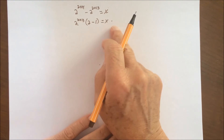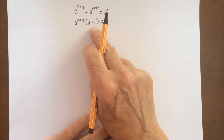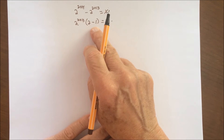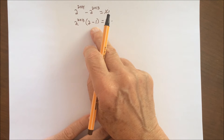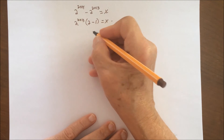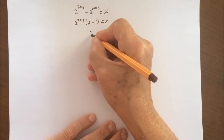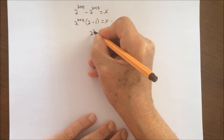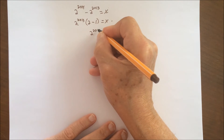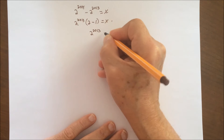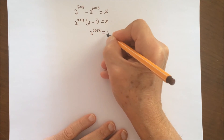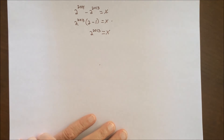Now we just subtract the terms inside the parentheses, and we get 2 to the 2.013 equals x. That's the solution to the equation.